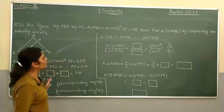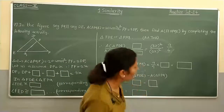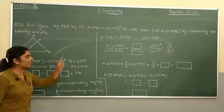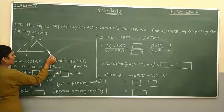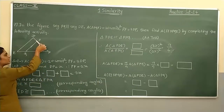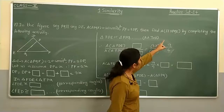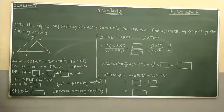Area of triangle PQF is equal to 20 unit square. PF is equal to 2 DP, meaning if DP is one part, then PF will be two DPs — that is their ratio. We have to find the area of quadrilateral DPQE by completing the following activity.